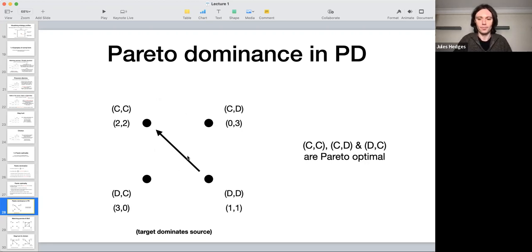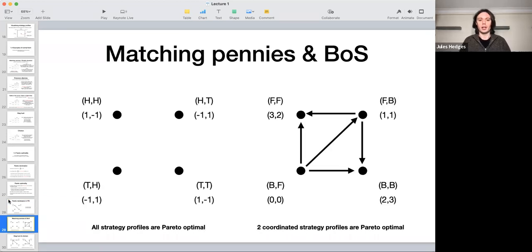So when you draw this kind of picture, being Pareto optimal kind of means you're not the source of any arrow. So DC and CD are kind of isolated there. They don't Pareto dominate anything and they're not Pareto dominated by anything, but that makes them Pareto optimal. So in particular, you can be Pareto optimal without Pareto dominating anything else.